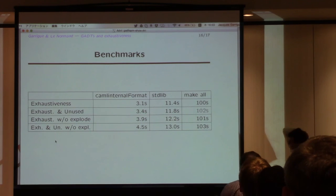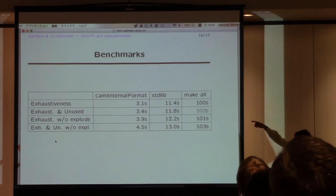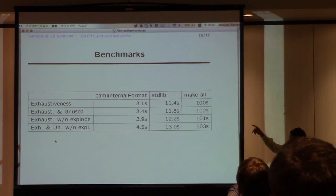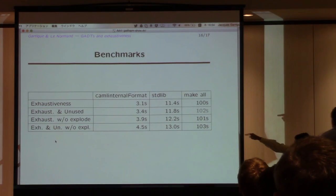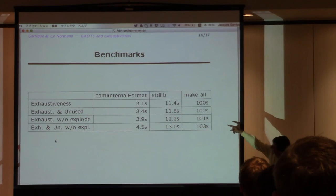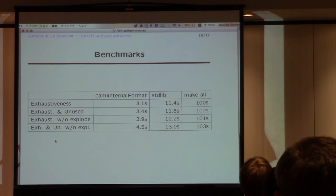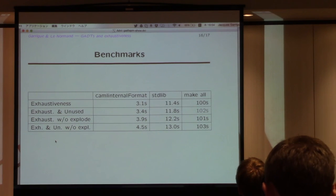So I have a small benchmark. I tried a small benchmark with different cases. So the baseline is OCaml trunk until now, the first line. CamlinternalFormat is the only file in the OCaml distribution which uses very heavily GADTs. Then, if you try both exhaustiveness and unused, but without exploding anything, you get the second line. If you try to explode things with exhaustiveness, you get the third line, and then if you try both, you get the fourth line, and you realize that for CamlinternalFormat, this makes a big difference. For stdlib, it's not. If you make all of OCaml, the total is maximum 3% difference, but the only goal is GADTs, so there is a discussion whether it's worth it or not.